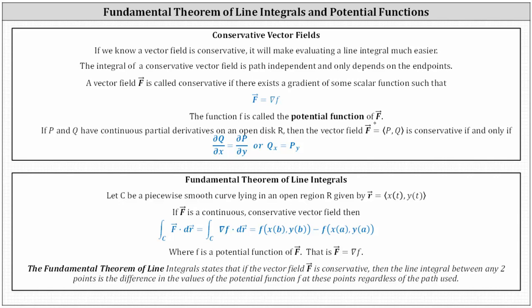If P and Q have continuous partial derivatives on an open disk R, then the vector field F with components P and Q is conservative if and only if the partial of Q with respect to X equals the partial of P with respect to Y. If a vector field is conservative, we can determine the potential function by integrating P with respect to X and Q with respect to Y, and then use it to evaluate a line integral using the two endpoints of the curve.